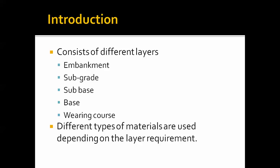A pavement will have different layers. In the case of embankment roads, the bottommost layer will be embankment, above that a subgrade layer, and above that a sub-base and base layer. The sub-base layer is optional — it is used where the bearing capacity of the soil is poor or where high traffic is expected. The sub-base layer may or may not be present.